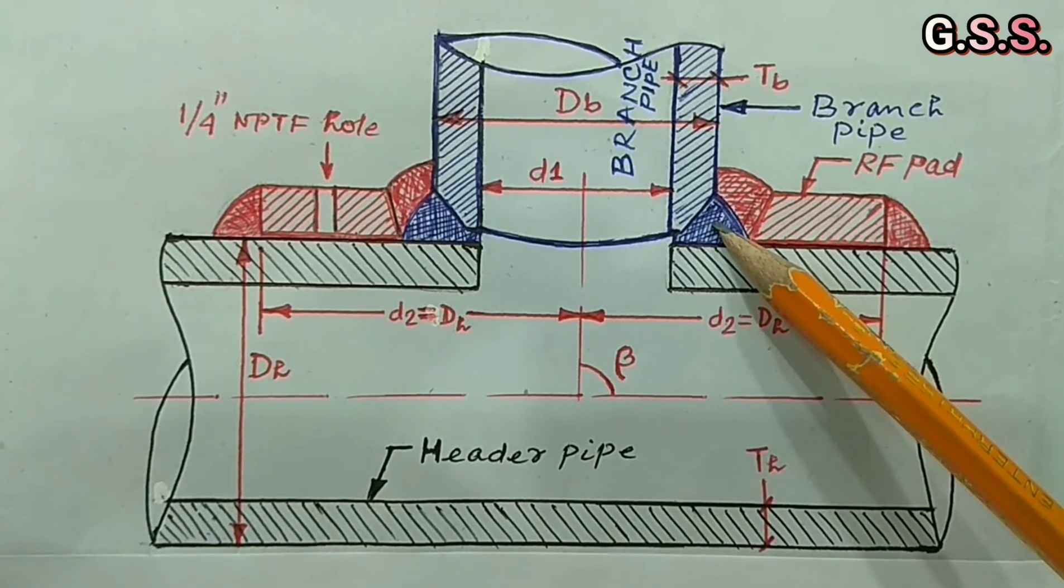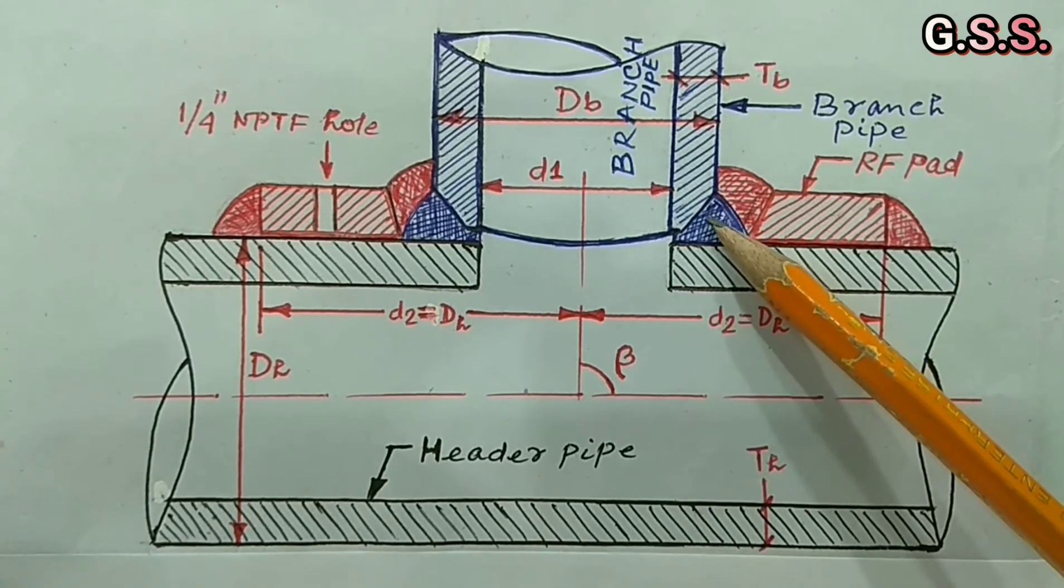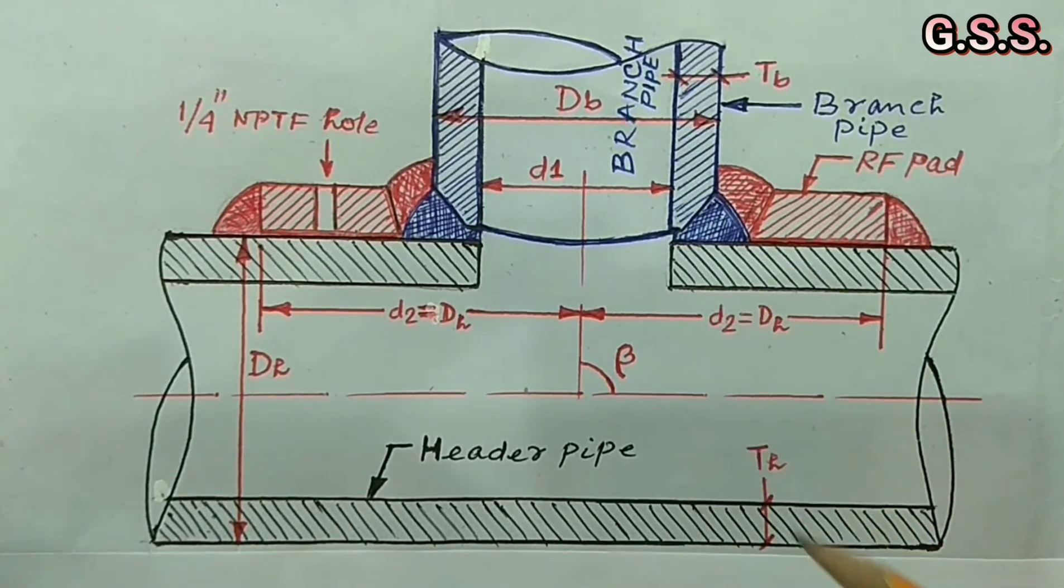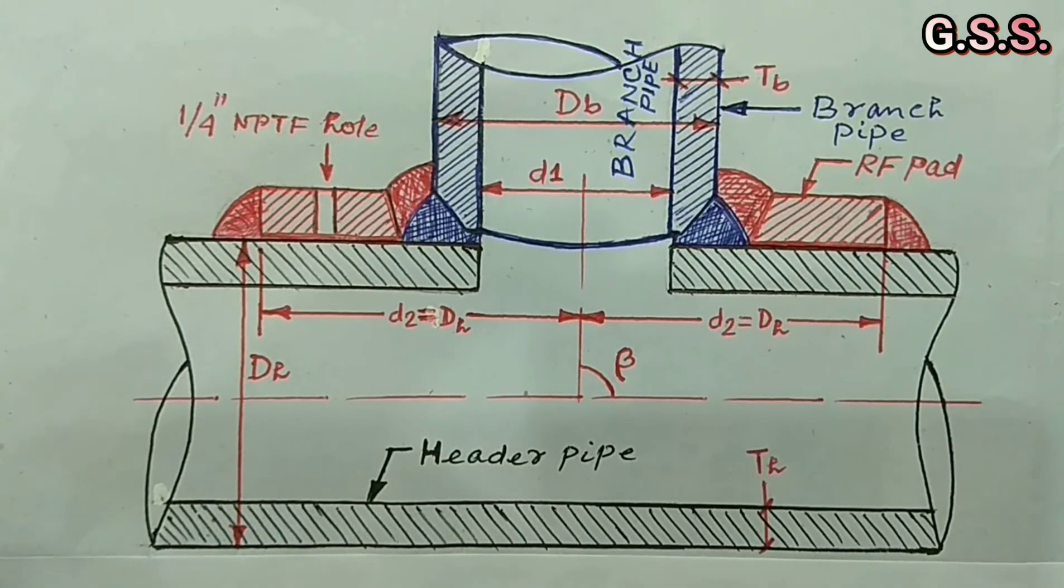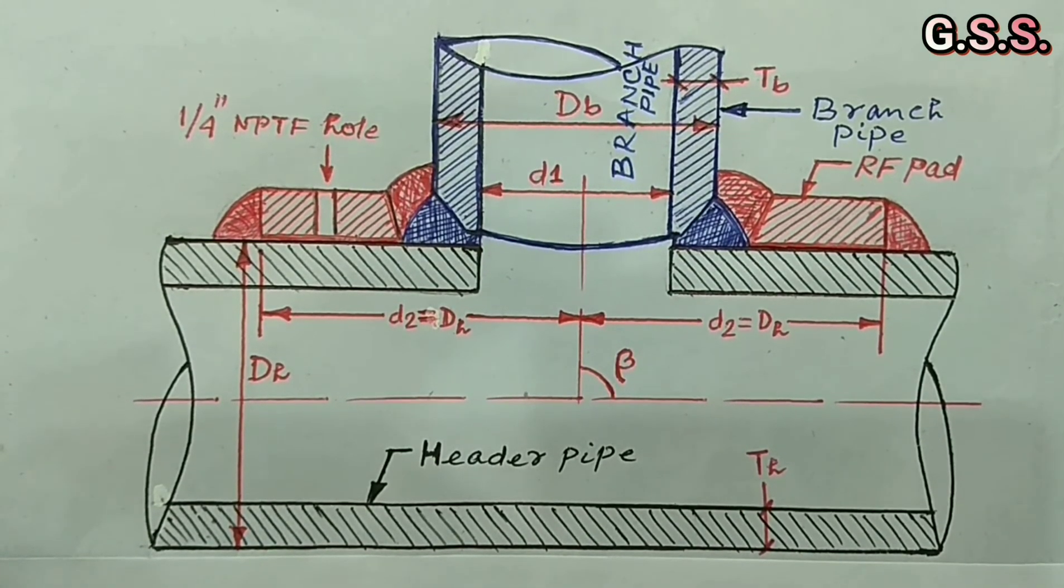Hence direct branch connection cannot take more piping load and moment and chance of failure is high.